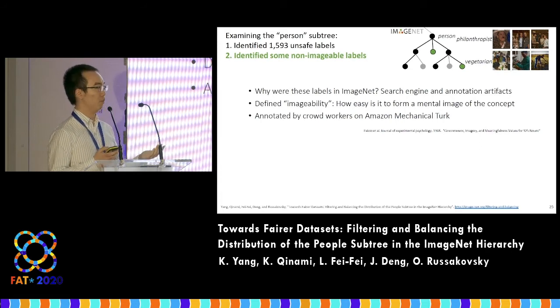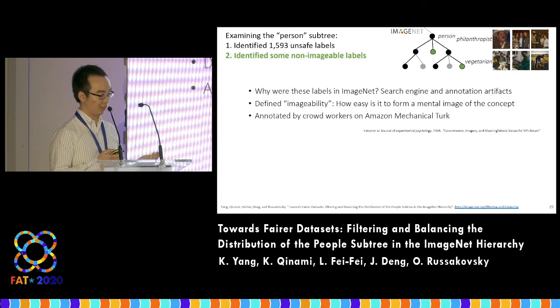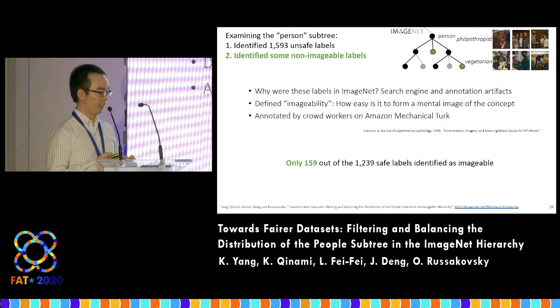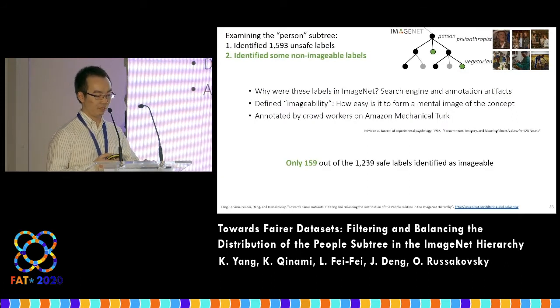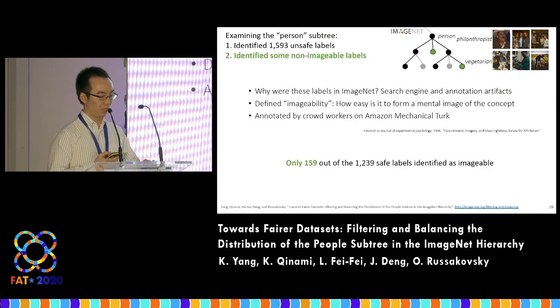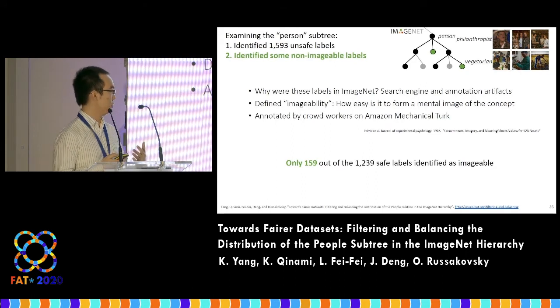That is to say, how easy it is to form a mental image of the concept. As a result, we determined that only 158 out of the 1,239 safe labels are actually imageable.